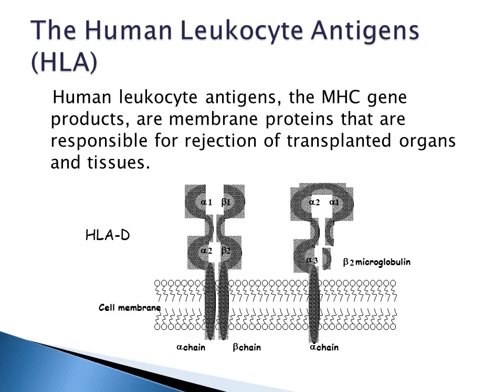The human leukocyte antigens are membrane proteins that are responsible for rejection of transplanted organs and tissues. Class 2 and class 1 polypeptides are shown. Class 2 antigens consist of two chains, the alpha and the beta. Class 1 antigens consist of a heavy chain and a light chain associated together with a molecule of beta-2 microglobulin.